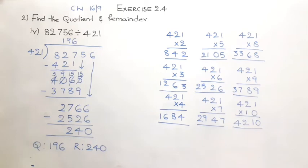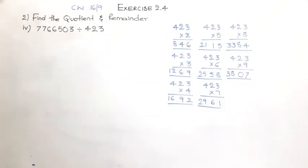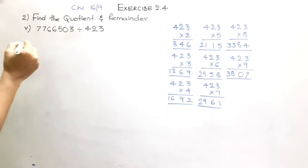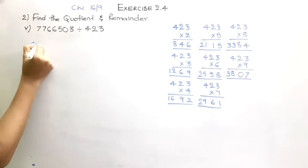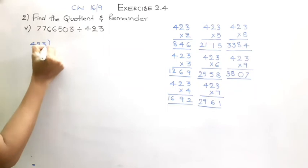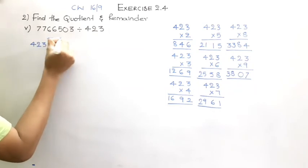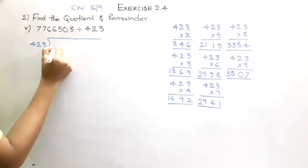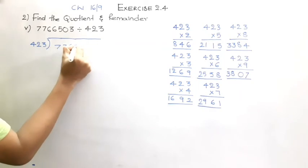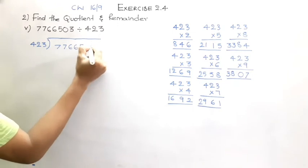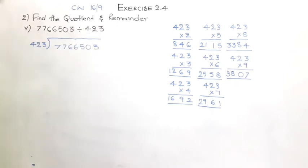Now the fifth problem: 77,66,503 should be divided by 423. I've written the table for 423. Let us start the division process. The divisor is 423 and the dividend is 77,66,503. This is one of the important questions children, please check the answer carefully.